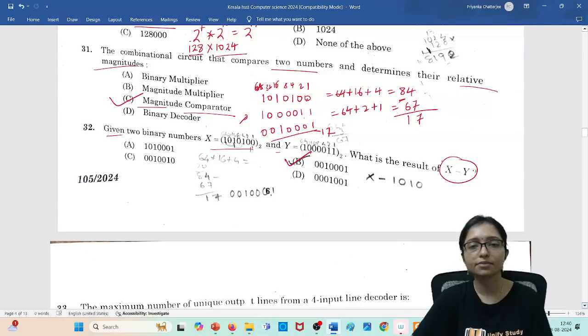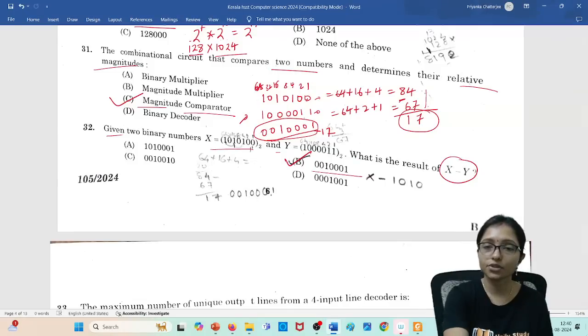Here two binary numbers are given, you need to do X minus Y. Very simple way, you can convert the binary to decimal number. So it is 84 minus 67, you are getting 17. 17 in binary is 010001. So that's why this is your answer: 010001.